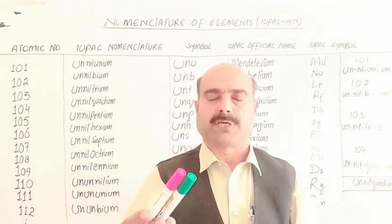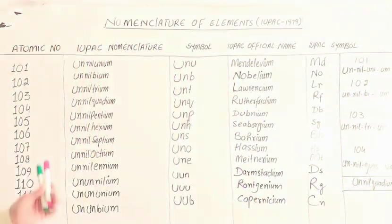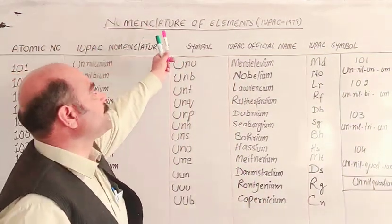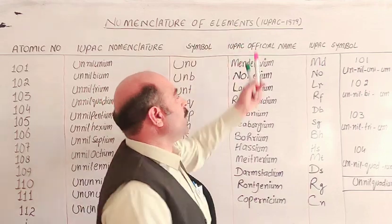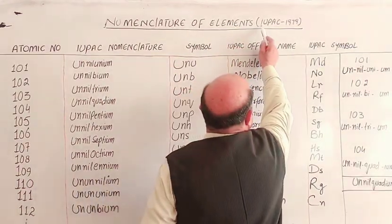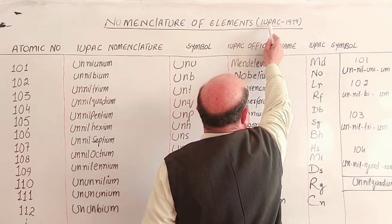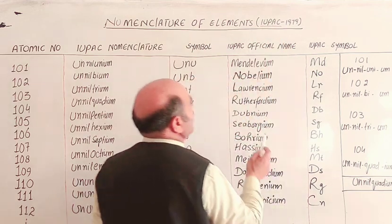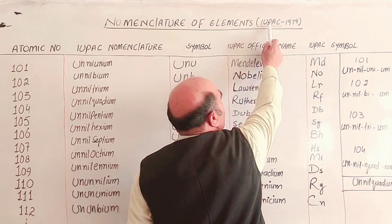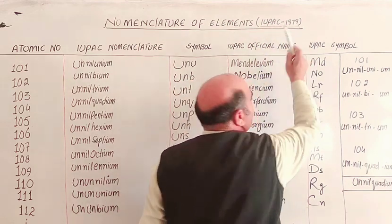Now, in the table we have discussed, the topic of the Nomenclature of Elements — the IUPAC, International Union of Pure and Applied Chemistry — these rules were published in 1979.